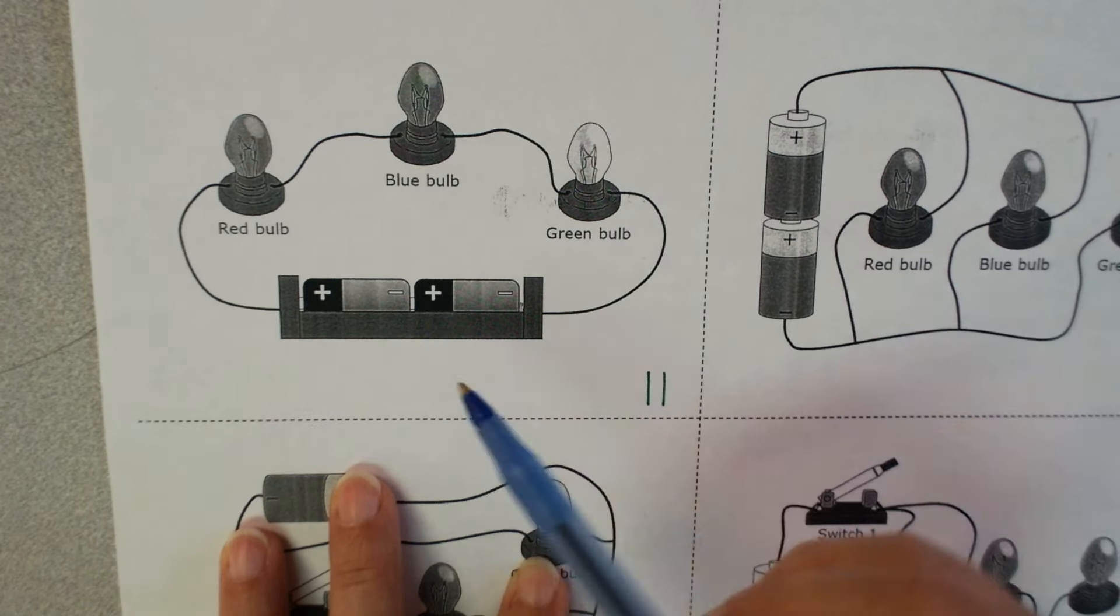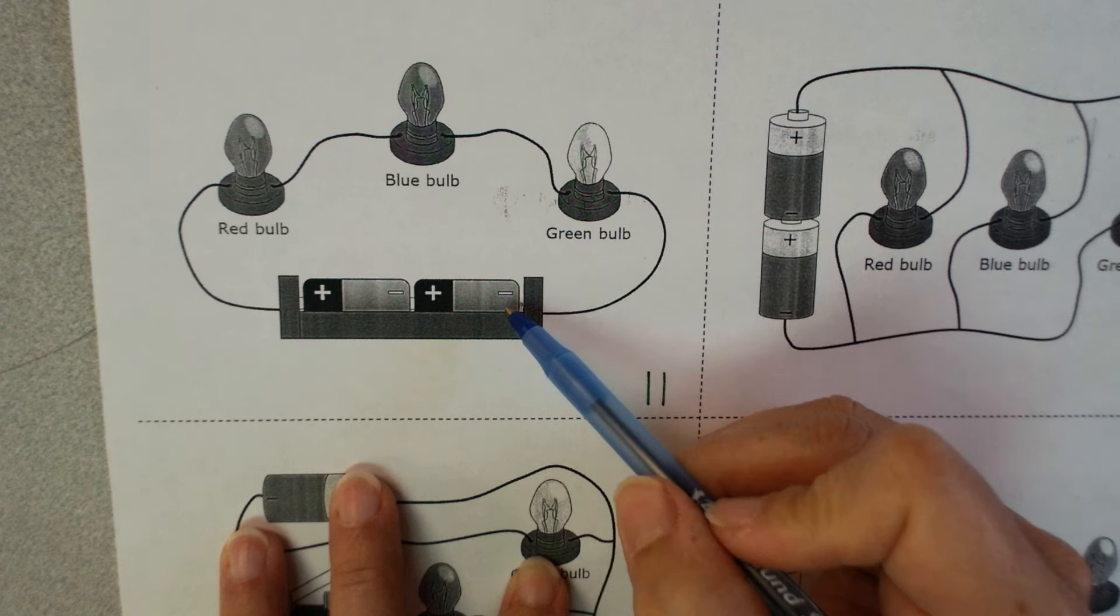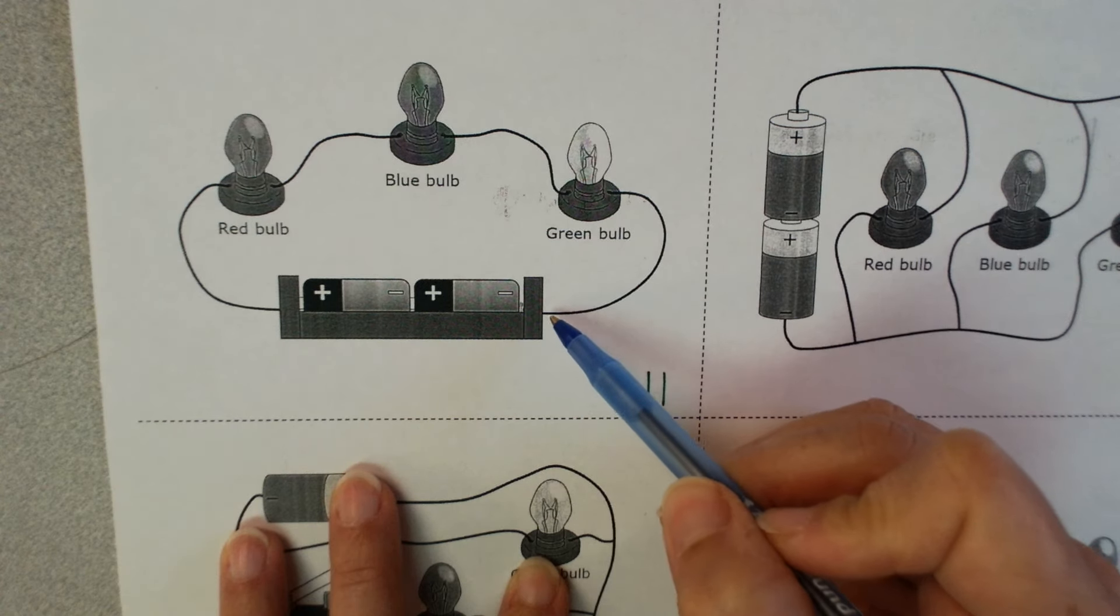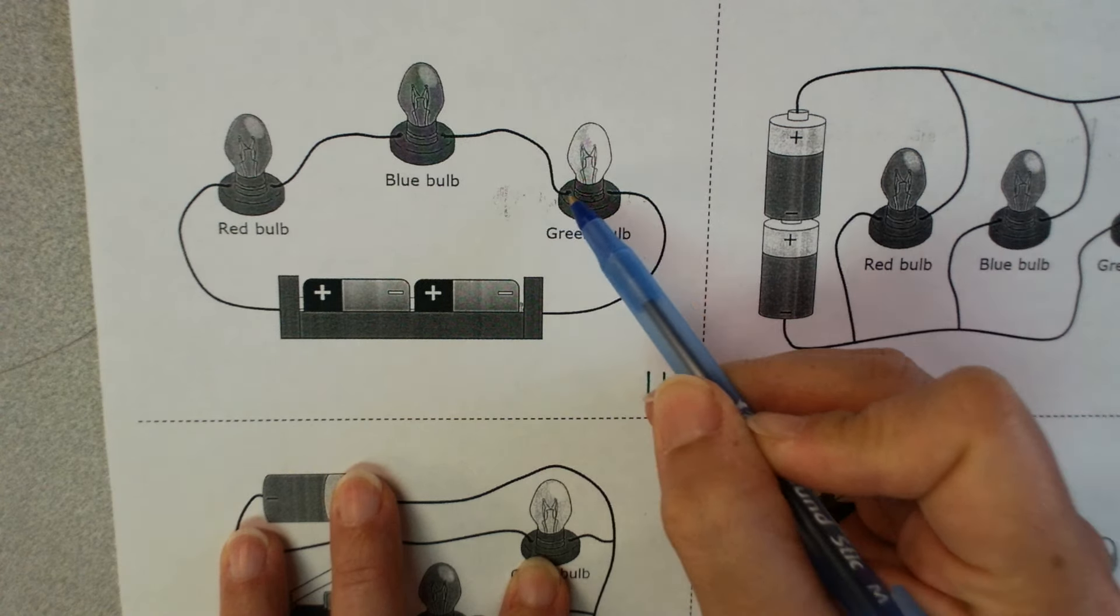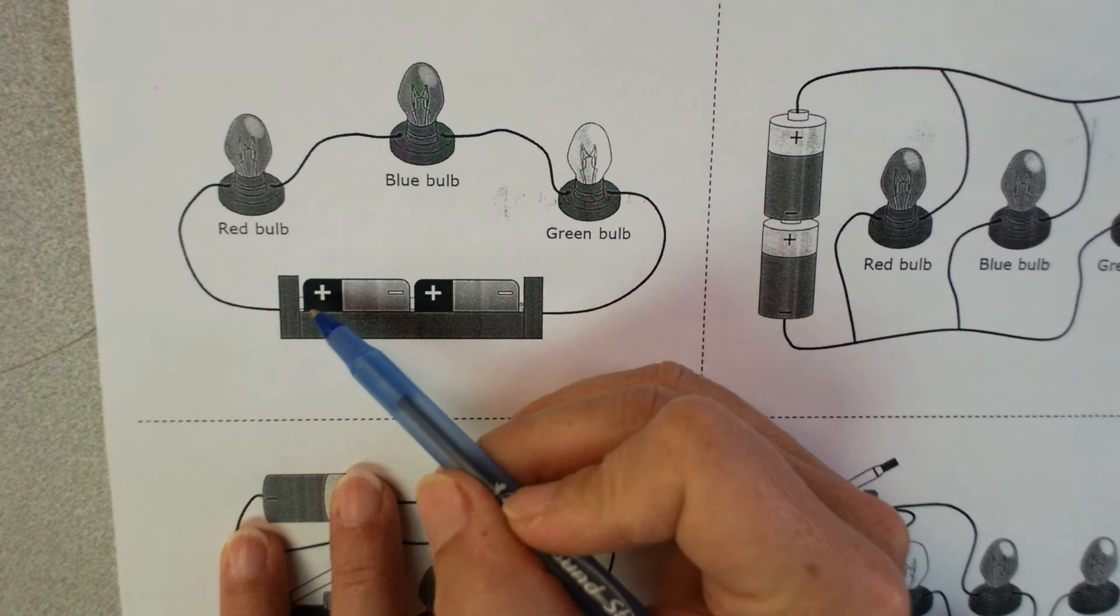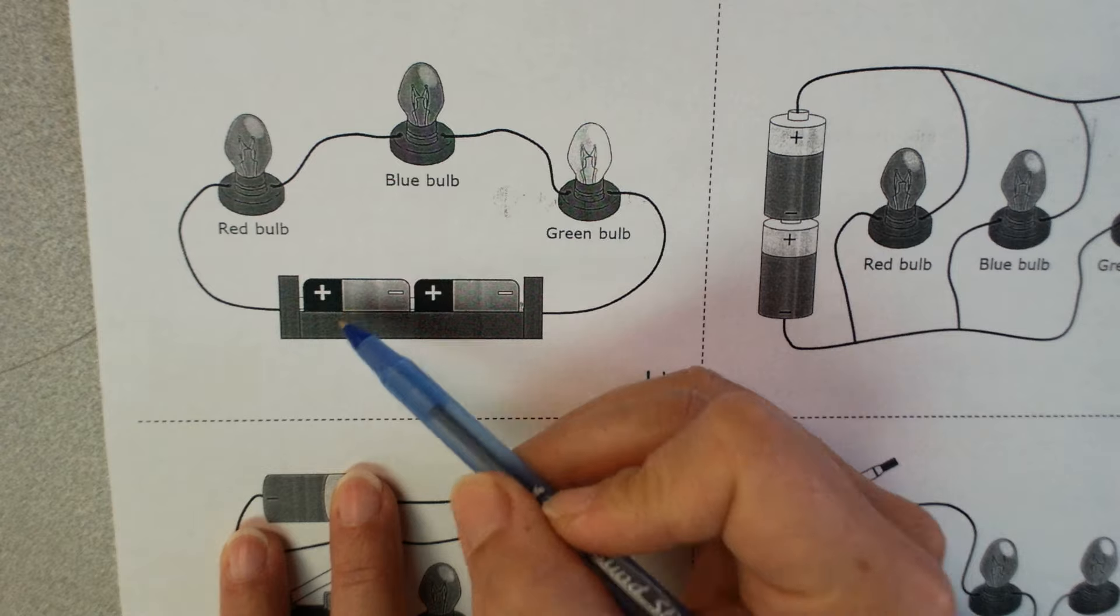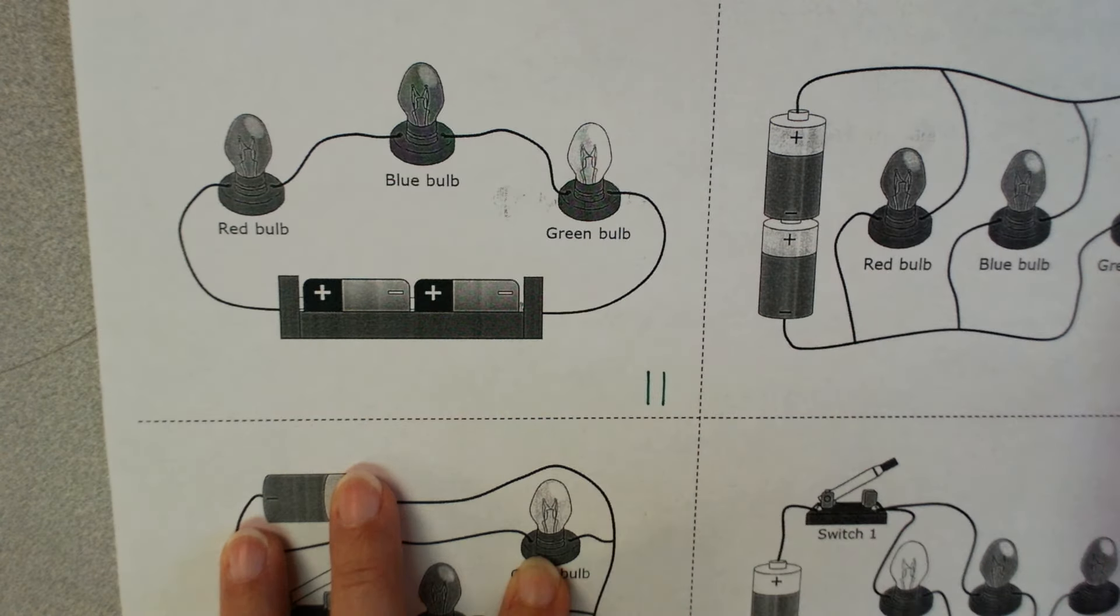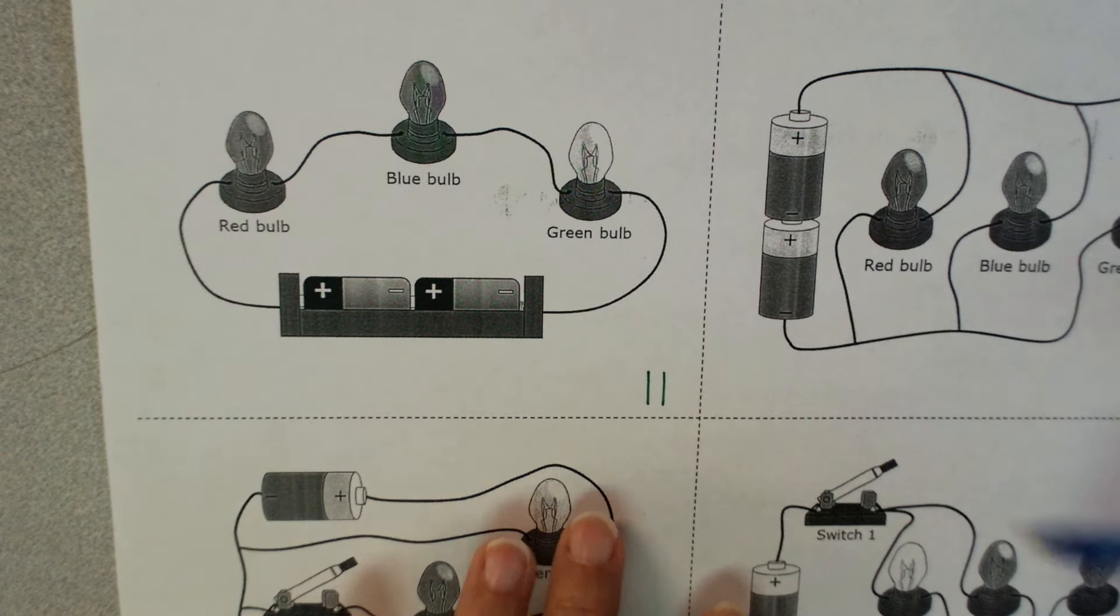If it were positive to positive, then it would not work. So in this example, electricity is going to flow out of the negative, and it's going to go through the green bulb, the blue bulb, the red bulb, and it can get back over here to the positive, therefore all three of those light bulbs are going to light up.